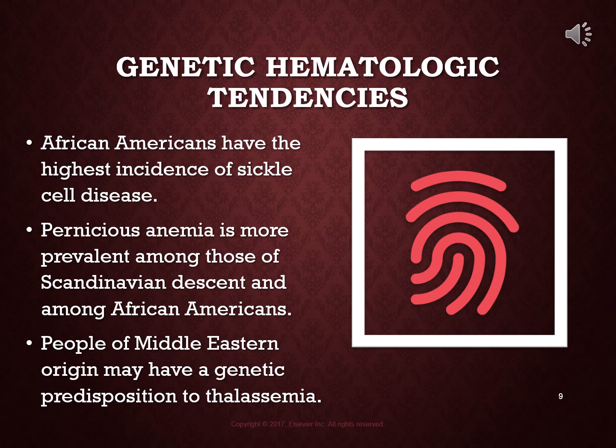There are genetic tendencies in the hematologic system to keep in mind. African Americans have the highest incidence of sickle cell disease. Pernicious anemia is more prevalent among those of Scandinavian descent and also among African Americans. People of Middle Eastern descent have a genetic predisposition to thalassemia. Taking genetics into account is very important when looking at hematologic disorders.